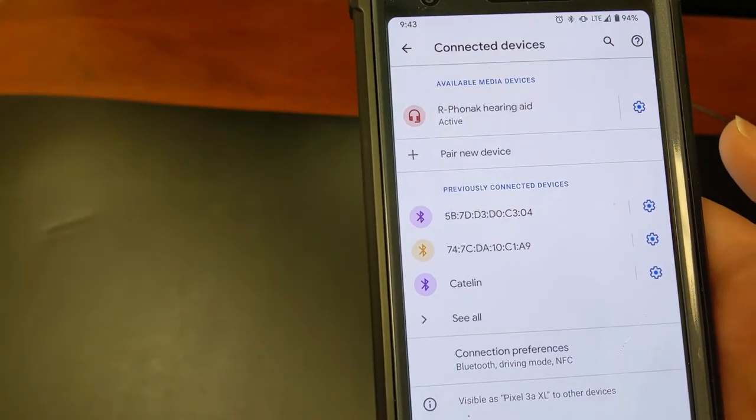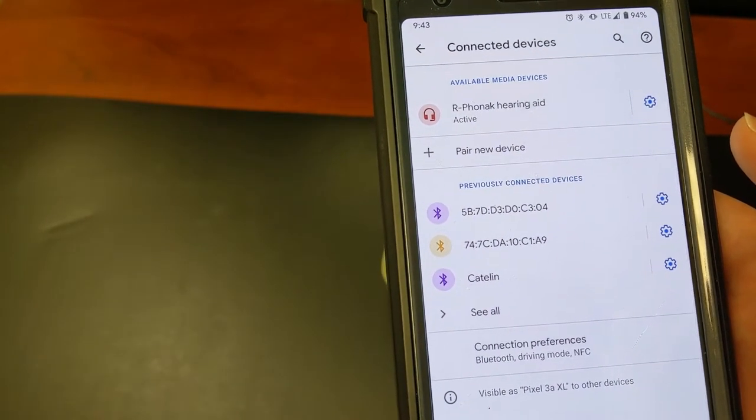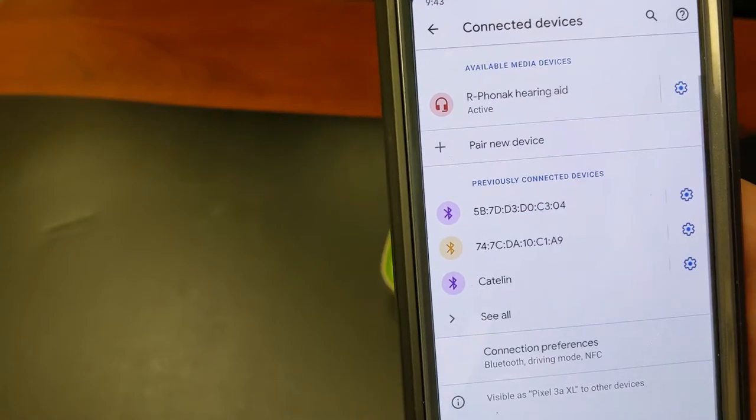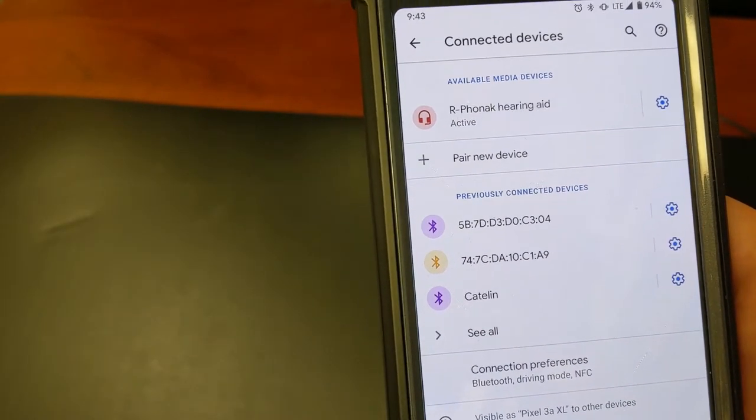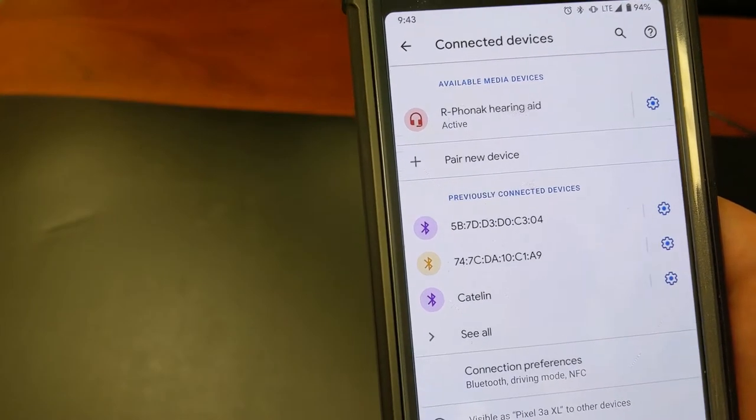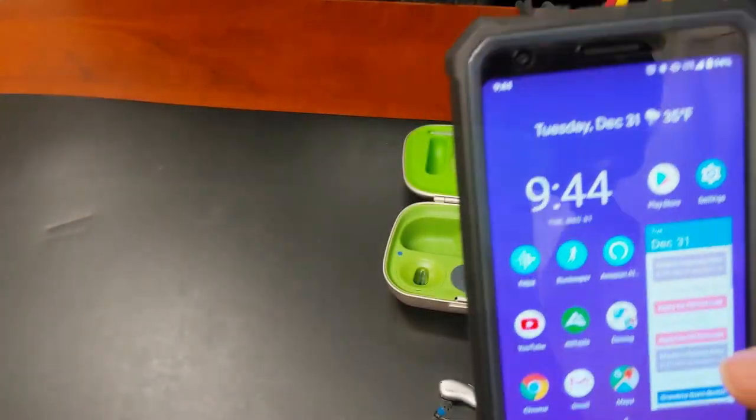Now it's completely normal for only one hearing aid to show up on this screen. Depending on how your provider sets it up it could be the right or the left. In this case it was the right and it is now paired and ready for Bluetooth streaming.